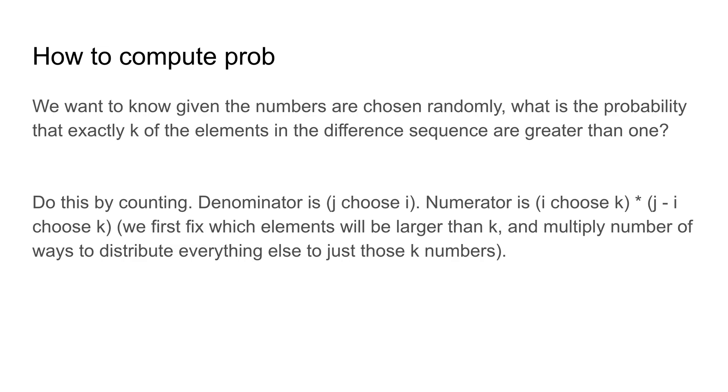The numerator is a little bit more complicated. It's a product of two different things. One is i choose k. So that is just the number of ways to fix which elements are strictly bigger than one. And the next part is j minus i choose k. And that's just the number of ways to distribute the remaining elements within the k numbers that we've chosen.